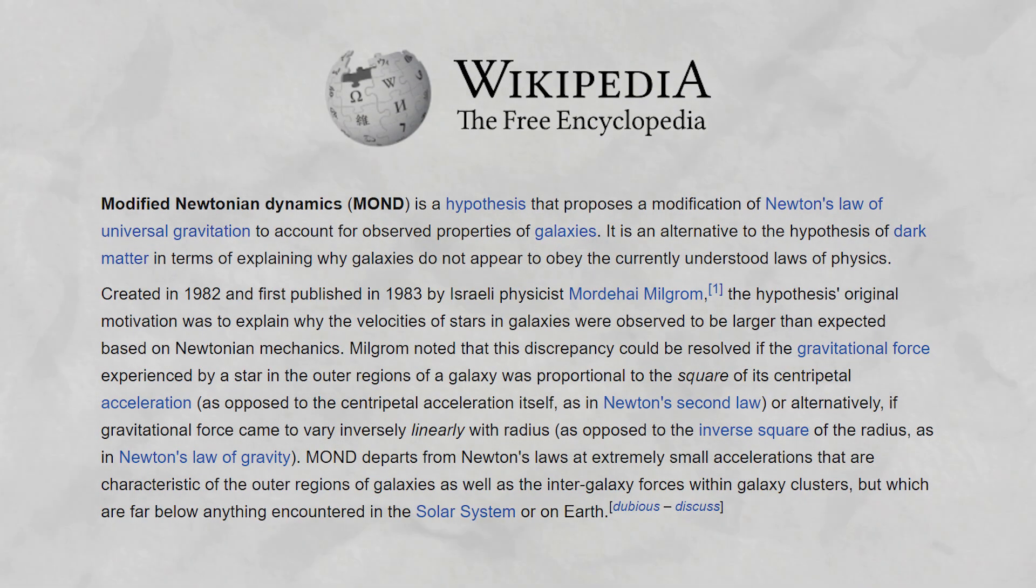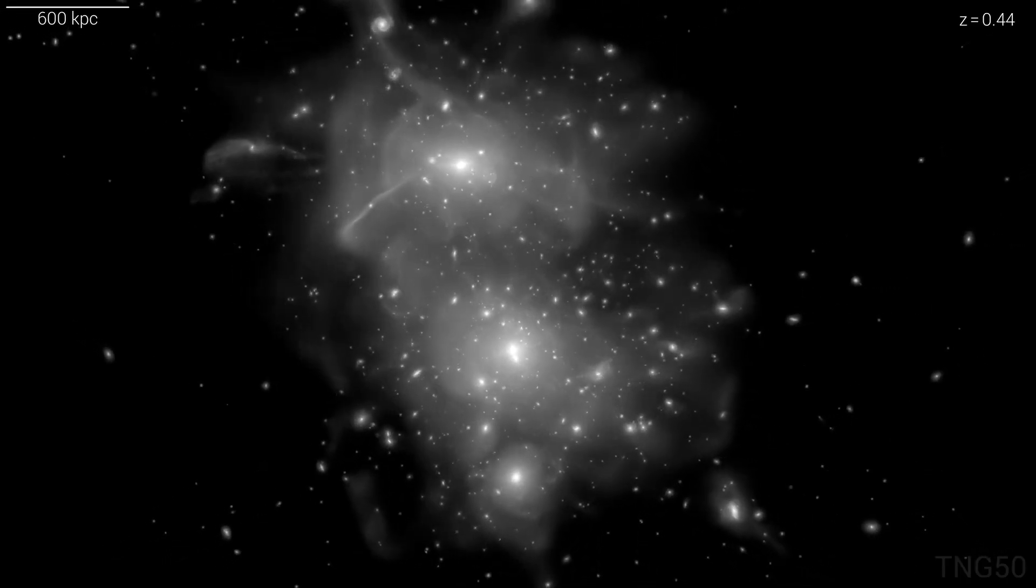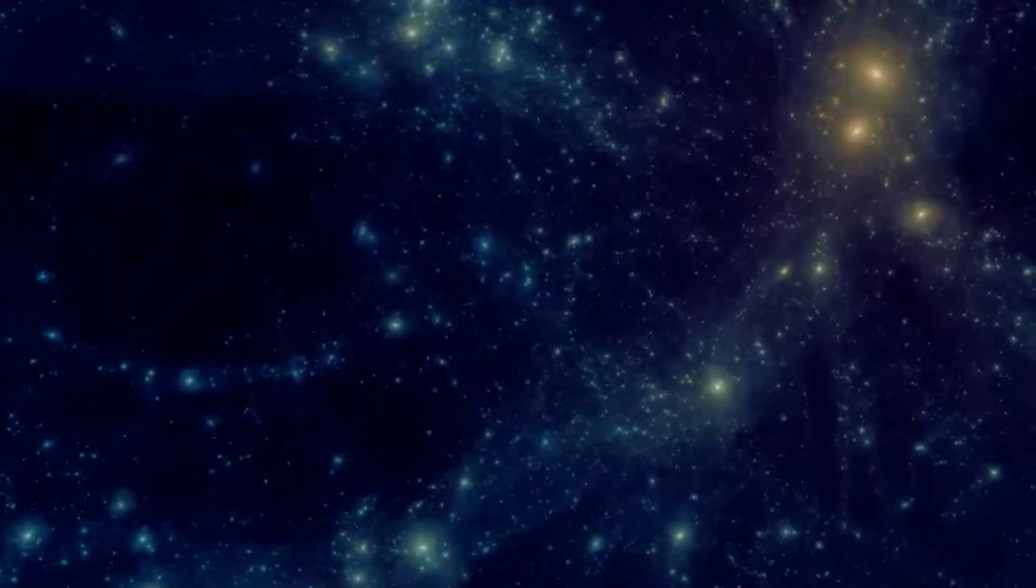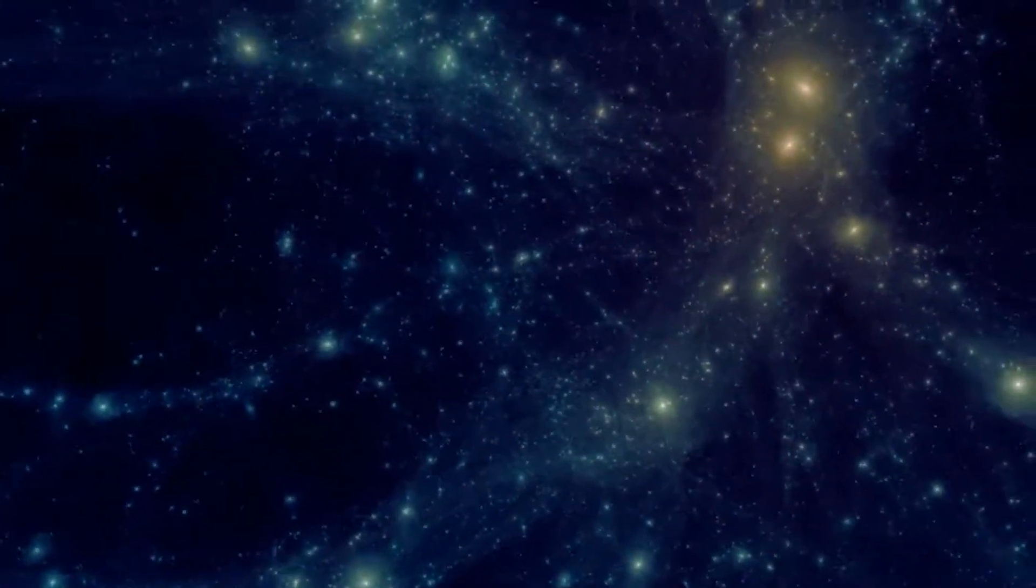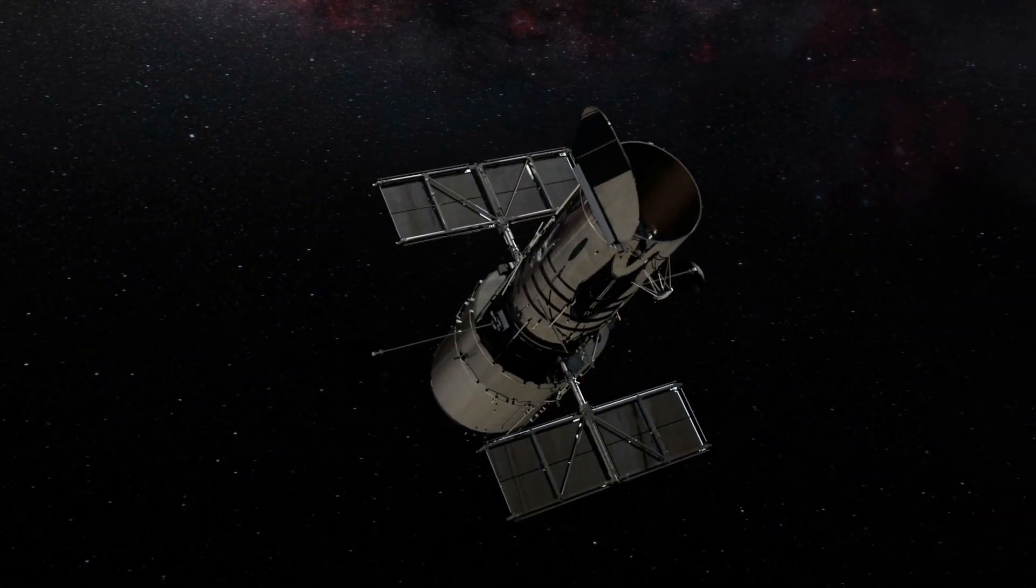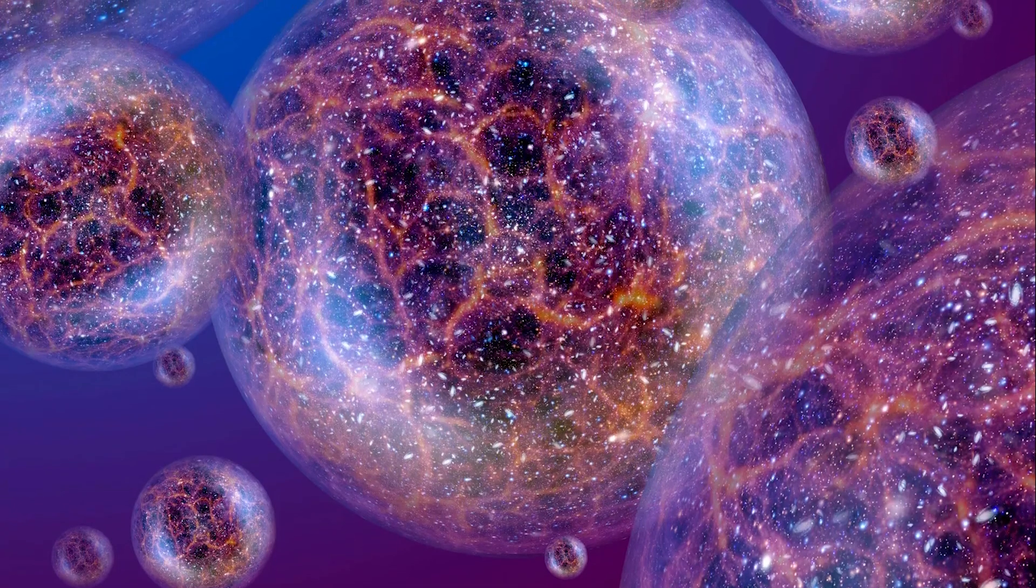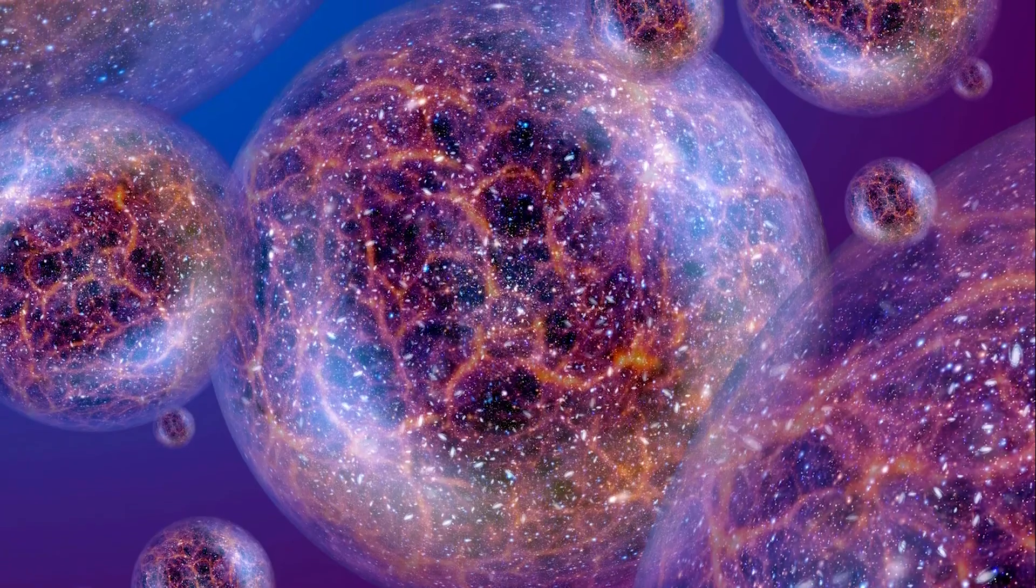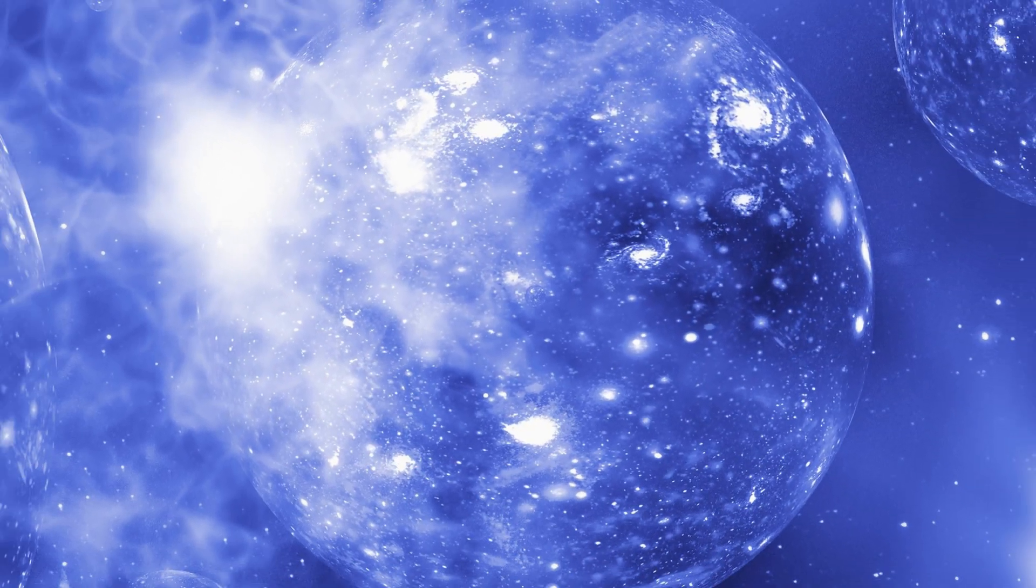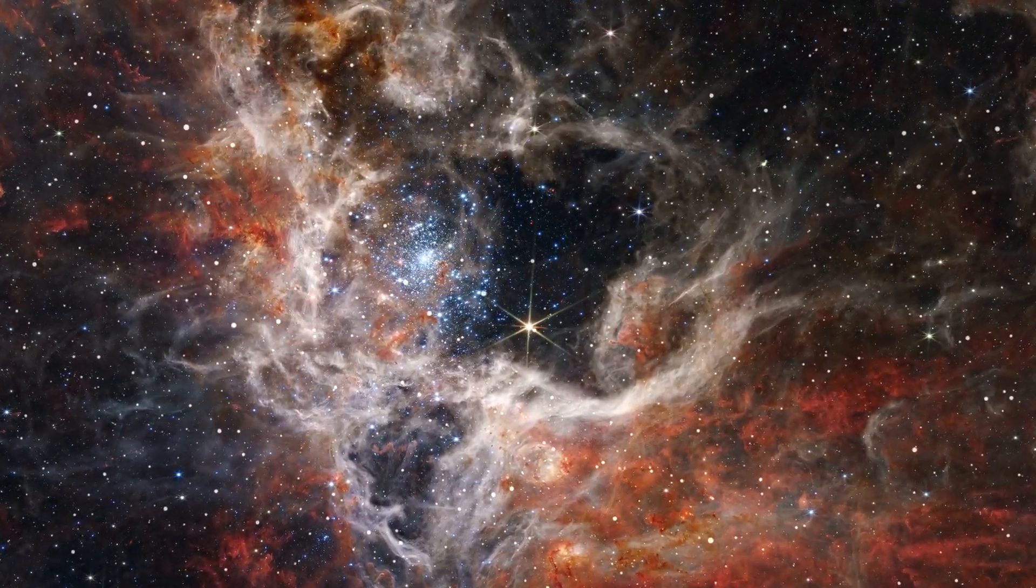Some researchers propose alternative gravity theories, such as Modified Newtonian Dynamics or Modified Gravity to explain cosmic phenomena traditionally attributed to dark matter. These theories seek to adjust gravitational laws on cosmic scales. However, they're still under scrutiny and face obstacles in accounting for all astronomical observations. Theoretical cosmological models suggest a possible link between dark matter and the multiverse concept, positing our universe as just one among many.